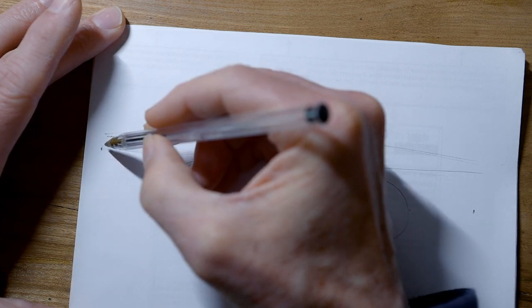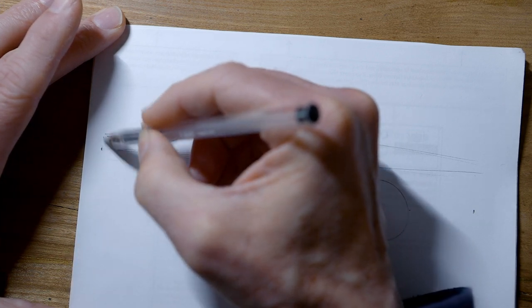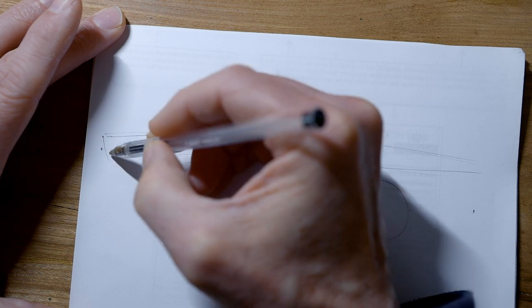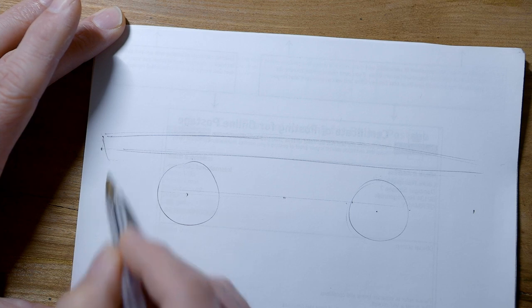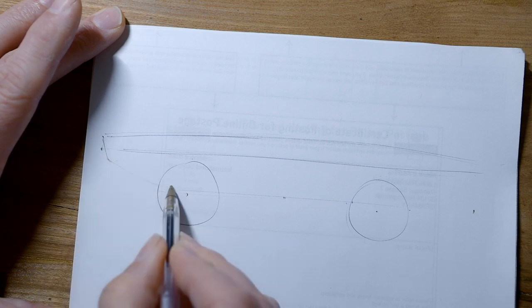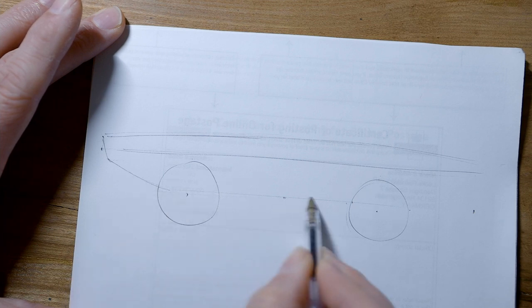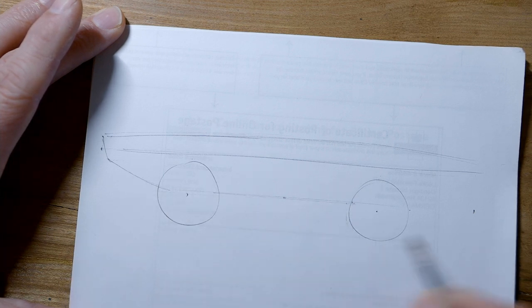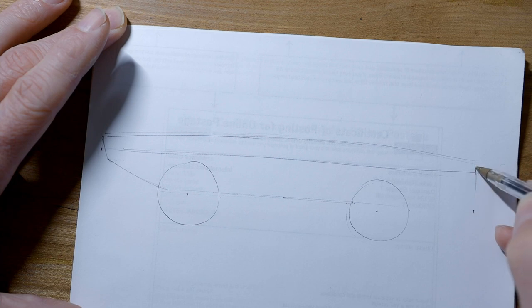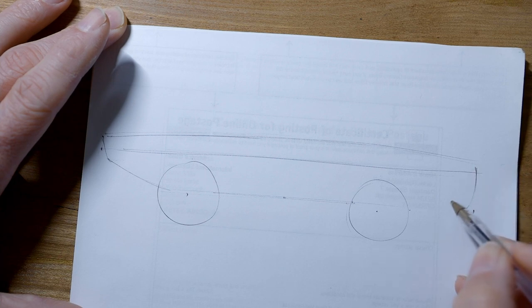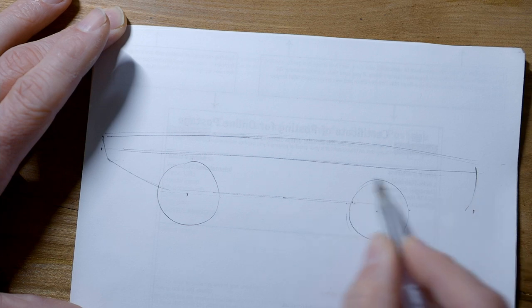So now we've got that top edge of the bodywork in, we can add these nice overhangs. So the front, we've got an area for the headlights, which see how it tilts slightly backwards. And then from there, it tilts down to try and meet this bottom line of the car. And a similar thing happens at the back, except this one is a bit steeper to start with. And then we might leave this bottom edge until we've sorted out the wheel arches.